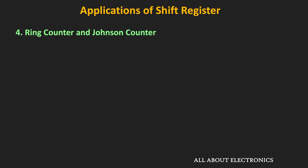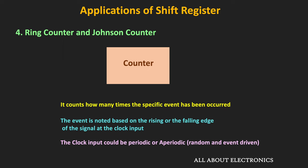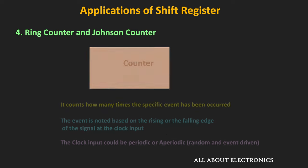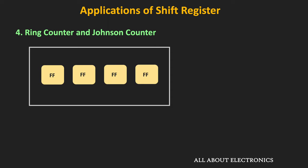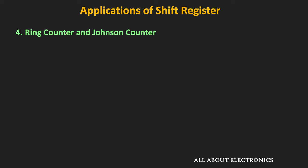Using the shift register, we can also design counters like the ring counter and the Johnson counter. The counter is a digital circuit that counts the number of times a particular event has occurred. Similar to the register, the counter is also designed using flip-flops. The output of each flip-flop represents a specific state of the counter. As the clock signal is applied, at the rising or falling edge, the state changes in a specific sequence. The number of different states which can be represented is known as the modulus or mode of the counter. For example, a mode 10 counter goes through 10 different states in sequence before repeating. The ring counter and Johnson counter are two such counters which can be designed using shift registers.